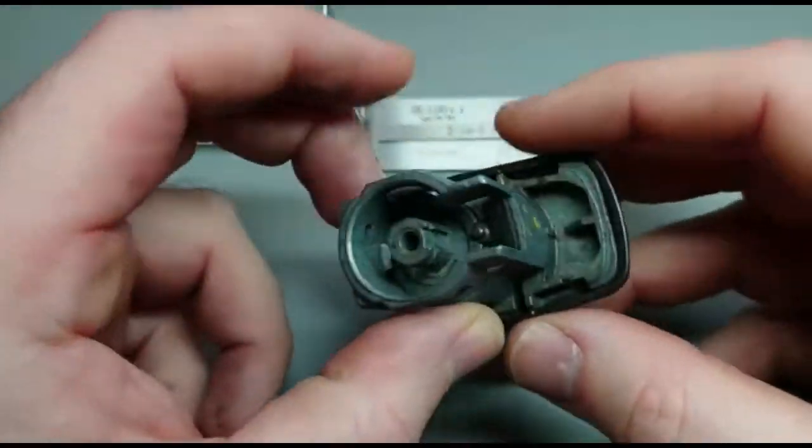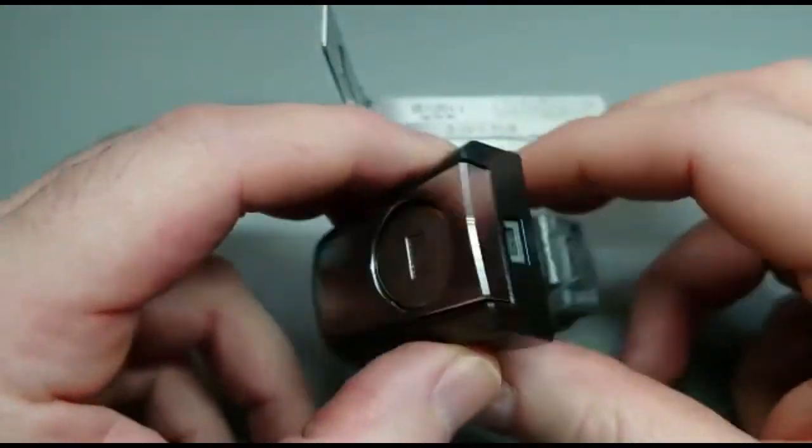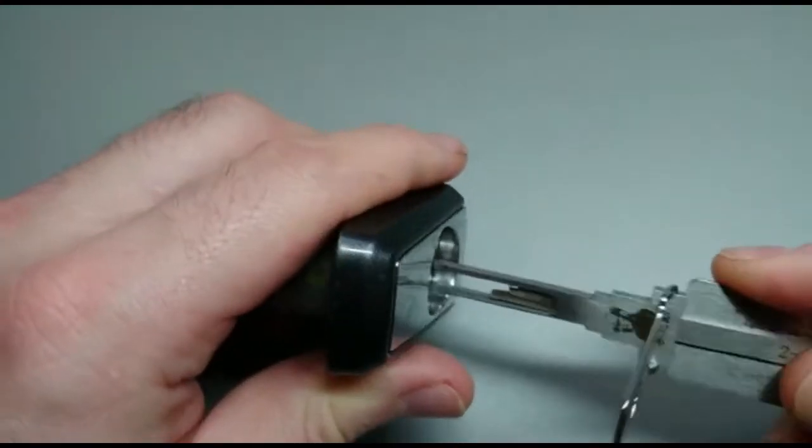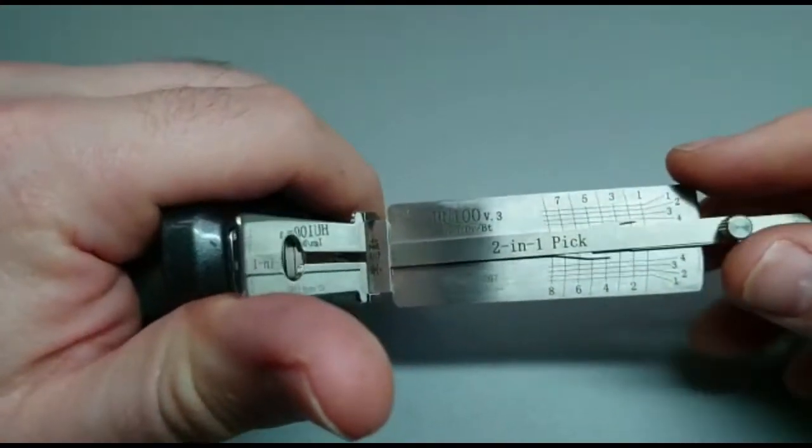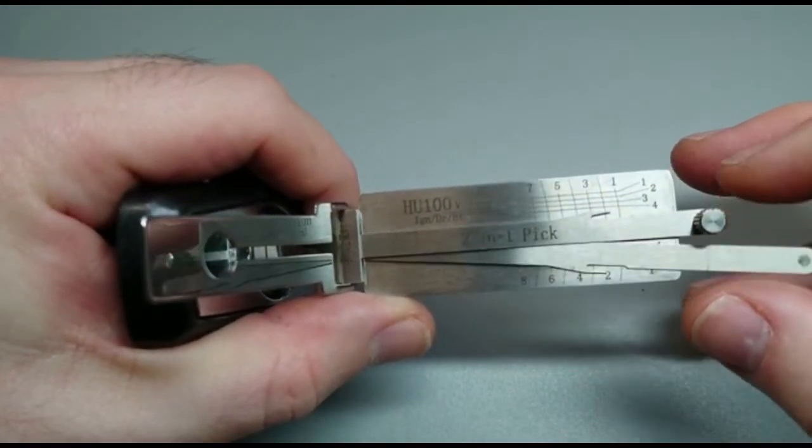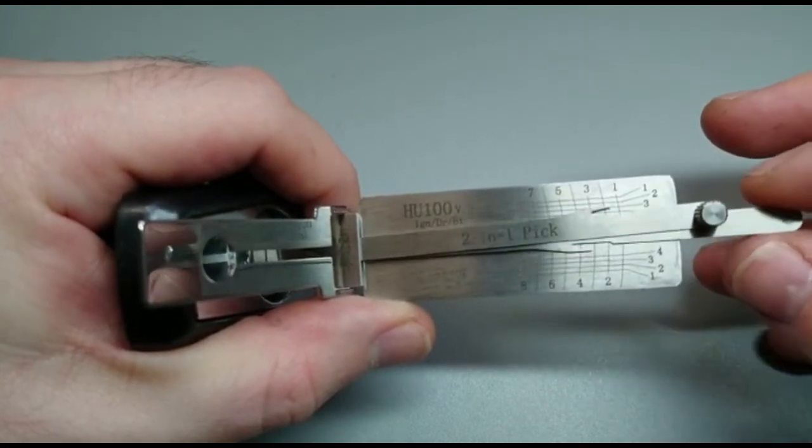Here we've got the HU100. These locks are used on Vauxhall, Opel, Buick, Cadillac, Chevy, again the HU100, a well used lock in vehicles.